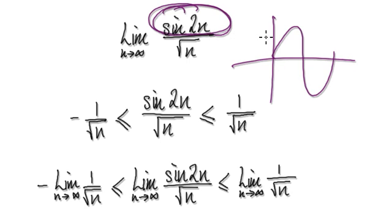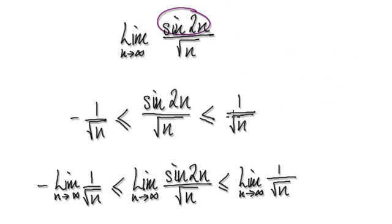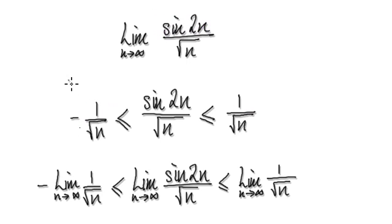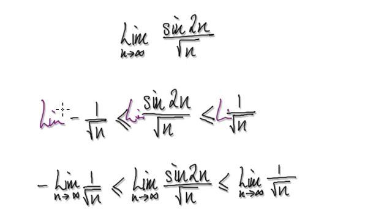Realize that the biggest value that sin² of n could be is 1, and the lowest that it could be is negative 1. So this expression here — the biggest value it could be is 1, and the lowest value it could be is negative 1. Now take the limit of all three sides.